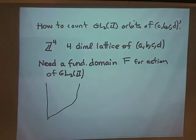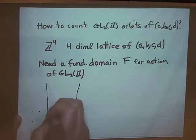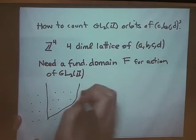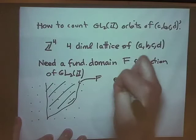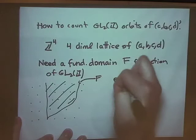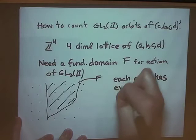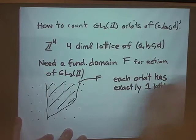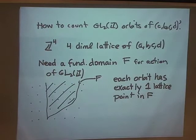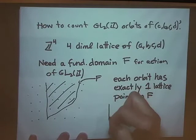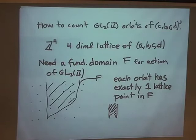The property a fundamental domain has is that each orbit has exactly one lattice point in F. You've seen an example: the standard fundamental domain for SL2Z acting on the upper half plane, where each orbit has one point in the standard region. In some important sense, the fundamental domain here is very much the same, except it's four-dimensional.